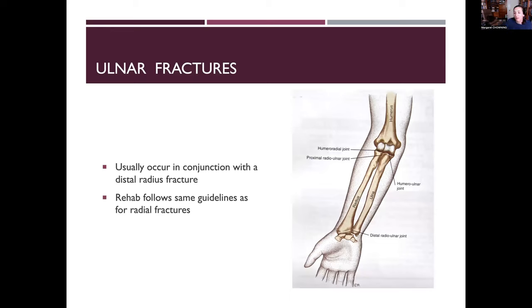Ulnar fractures are less common because the ulnar articulation is small compared to the radius at the wrist. They usually occur in conjunction with a distal radius fracture. Rehab follows the same guidelines: wait for the bone to heal, follow the protocol — usually six to eight weeks — then treat with soft tissue mobilization, watching for CRPS, and gentle range of motion. The ulnar styloid process is more prone to fracturing due to its prominence.